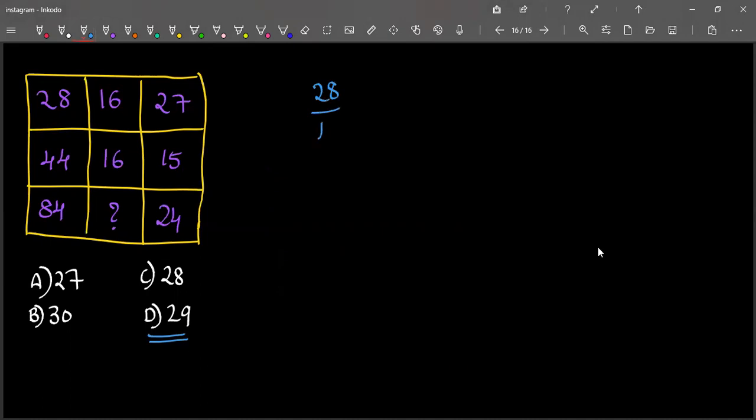28 divided by 4 and 27 divided by 3. We add these two, 7 plus 9 which is 16.